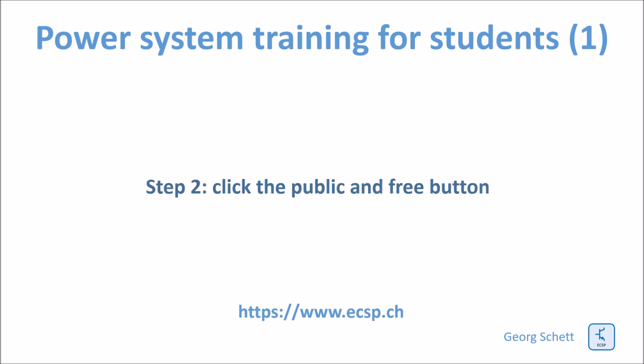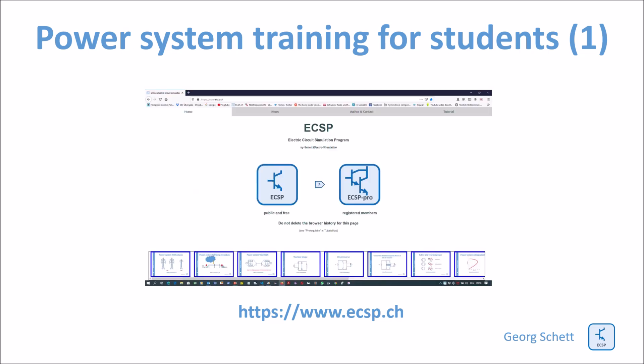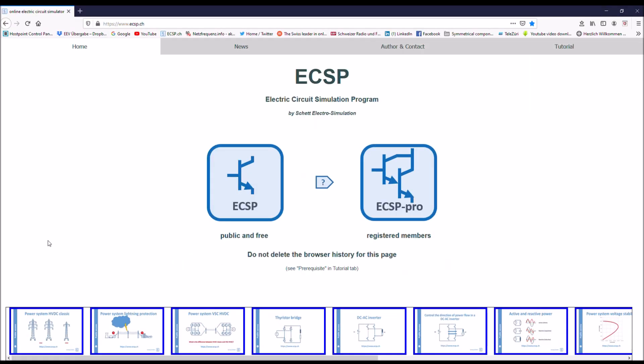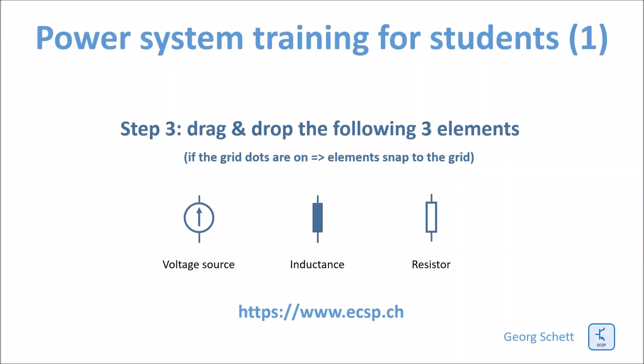To simulate and build up our very simple network, let's now make the next step. Let's click this button here. Then we enter the software. We click on this one and then we are on the software platform. Before you start placing the elements, please switch on this grid line button so that the elements snap to the grid. It's easier. Let's now drag and drop the following three elements — these are the elements we need for our small demonstration network.